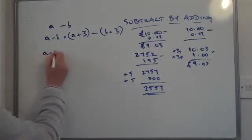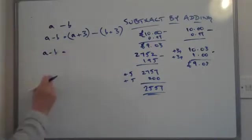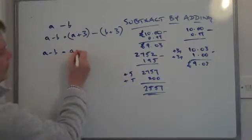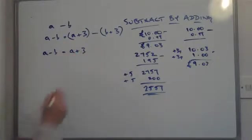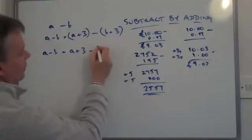So I've got A minus B on this side, that remains the same. On this side I've got A plus 3 minus B.